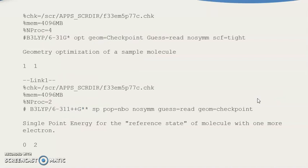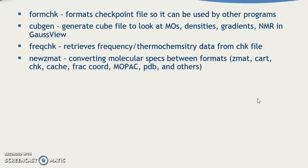So %chk=scratch path (e.g., /scratch/abs and so on) — these are technical terms you can see. Geometrical optimization of simple molecules with 1 and 1 (charge/multiplicity), then link 1. This information you will get. Then single point energy for the reference state of molecules with one more electron. The %chk command formats checkpoint files so they can be used by other programs.